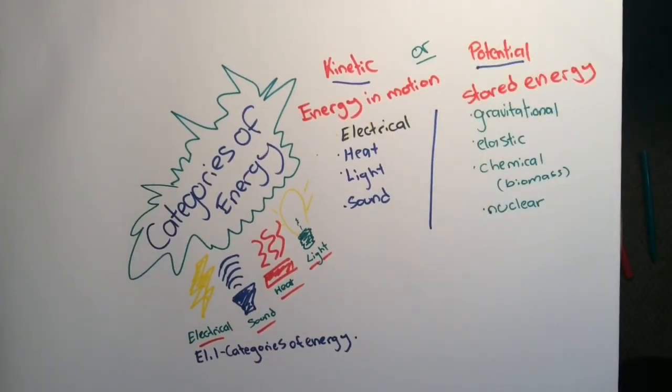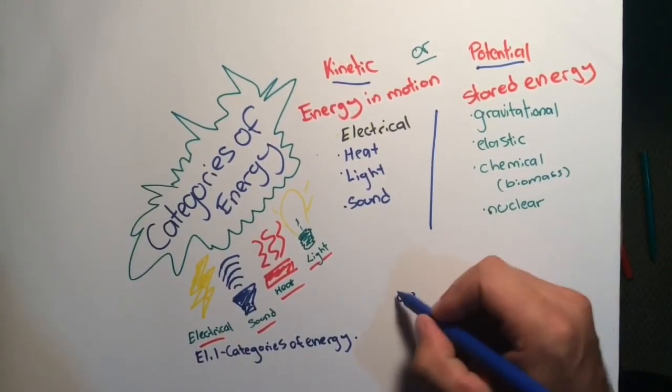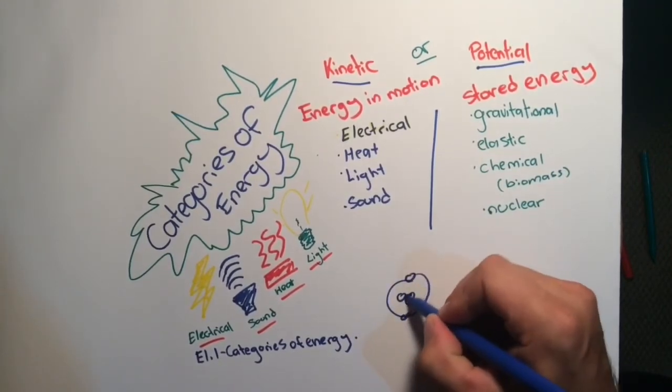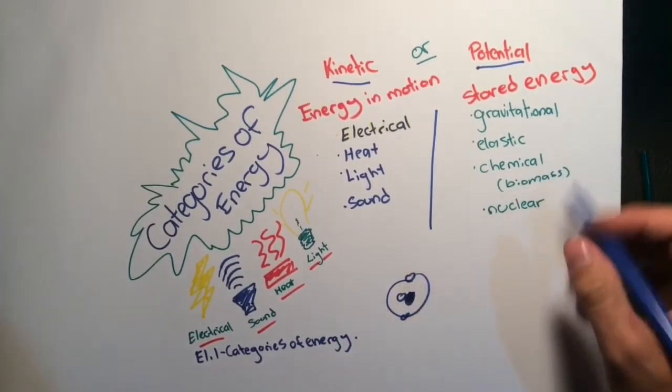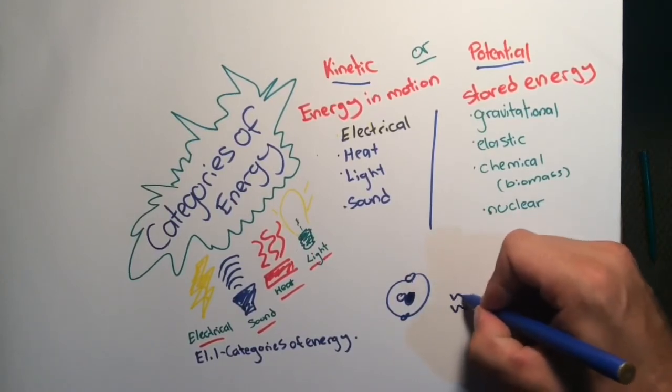Forms of potential or stored energy include gravitational, chemical including biomass, elastic, and nuclear. Each of these are examples of energy that is stored, ready for use in work.